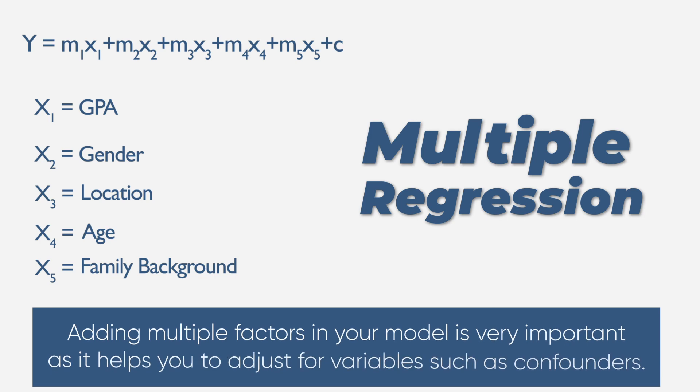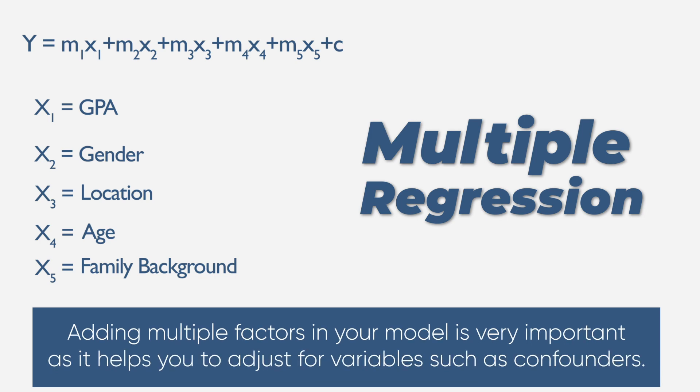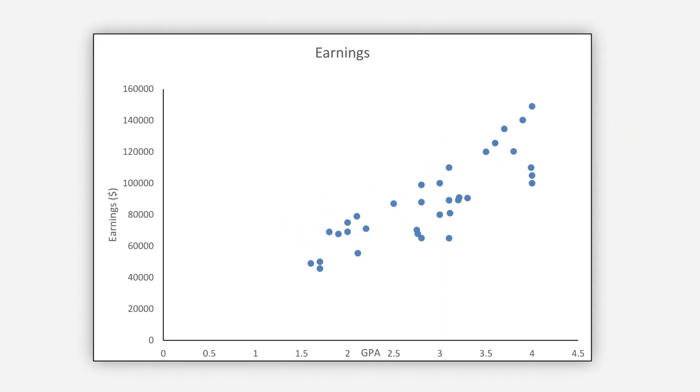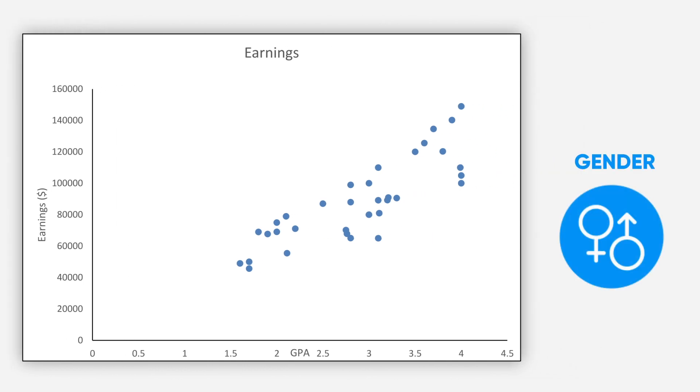Adding multiple factors in your model is very important as it helps you to adjust for variables such as confounders. For example, let's look at this previous graph.